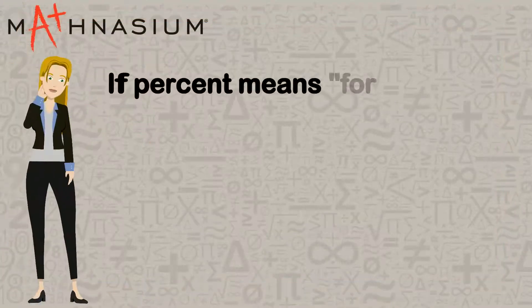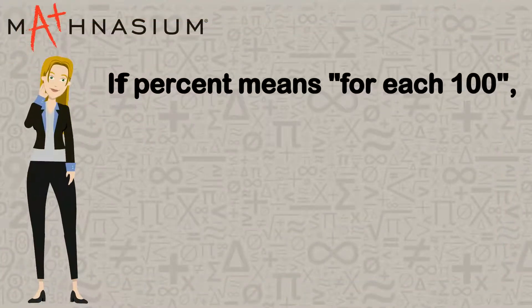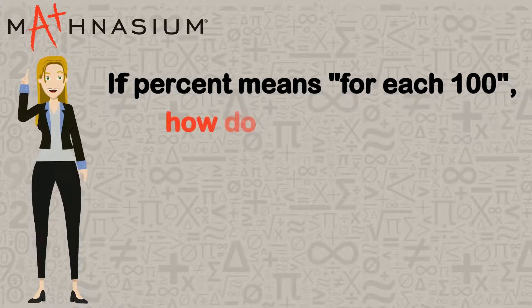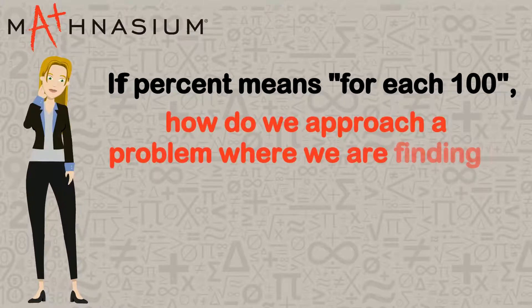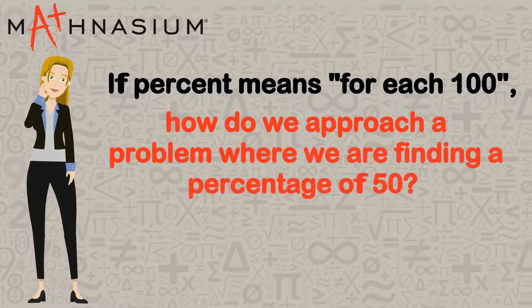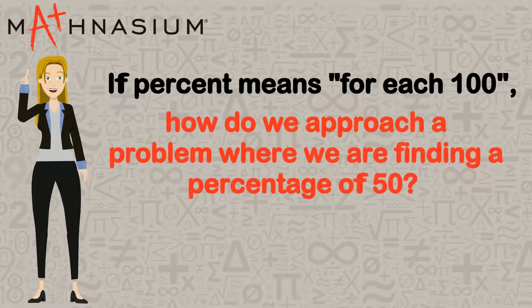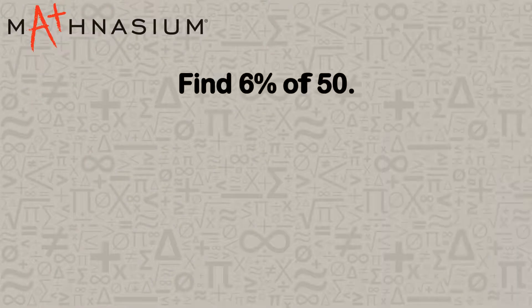If percent means for each 100, how do we approach a problem where we're finding a percentage of 50? Let's look at an example: find 6% of 50.